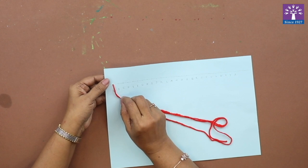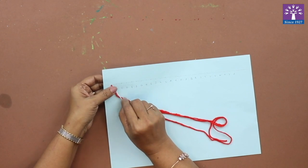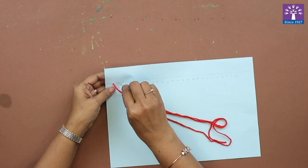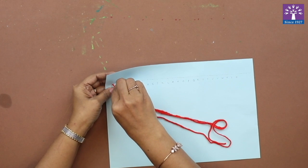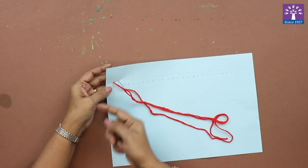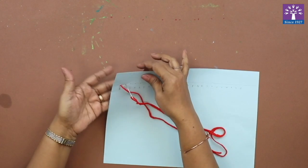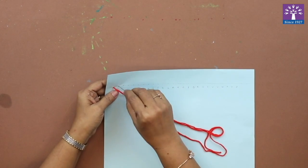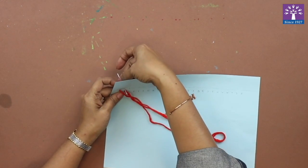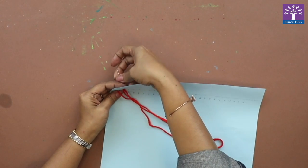Then on point B, see this is point B, you will put the needle from the front side. We started from the reverse side, that is the behind, and this is the front side, and we pull the needle out.